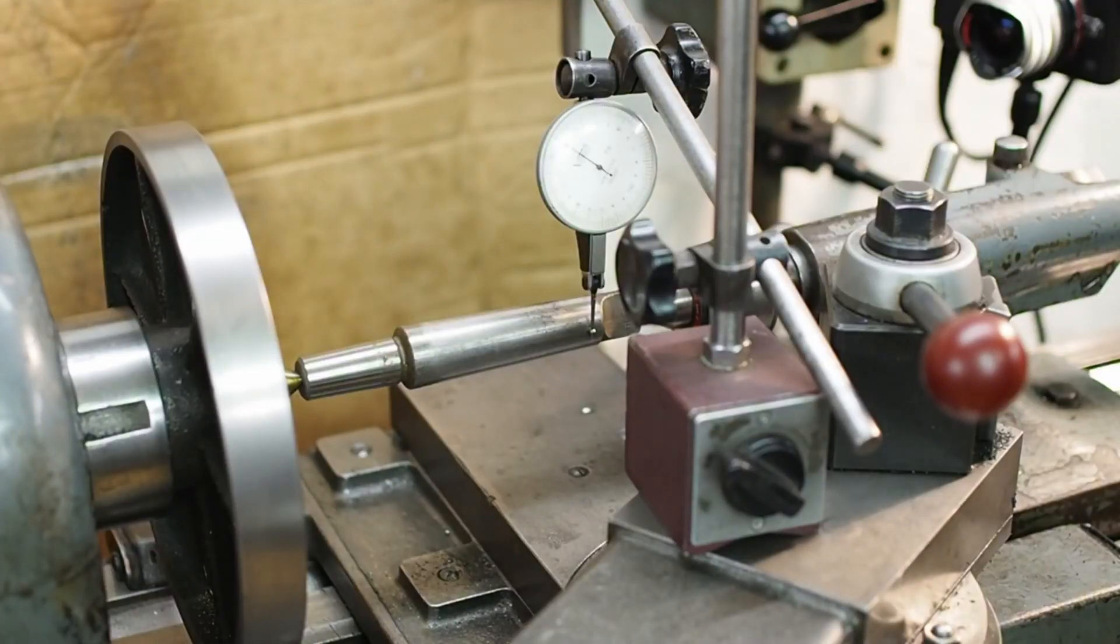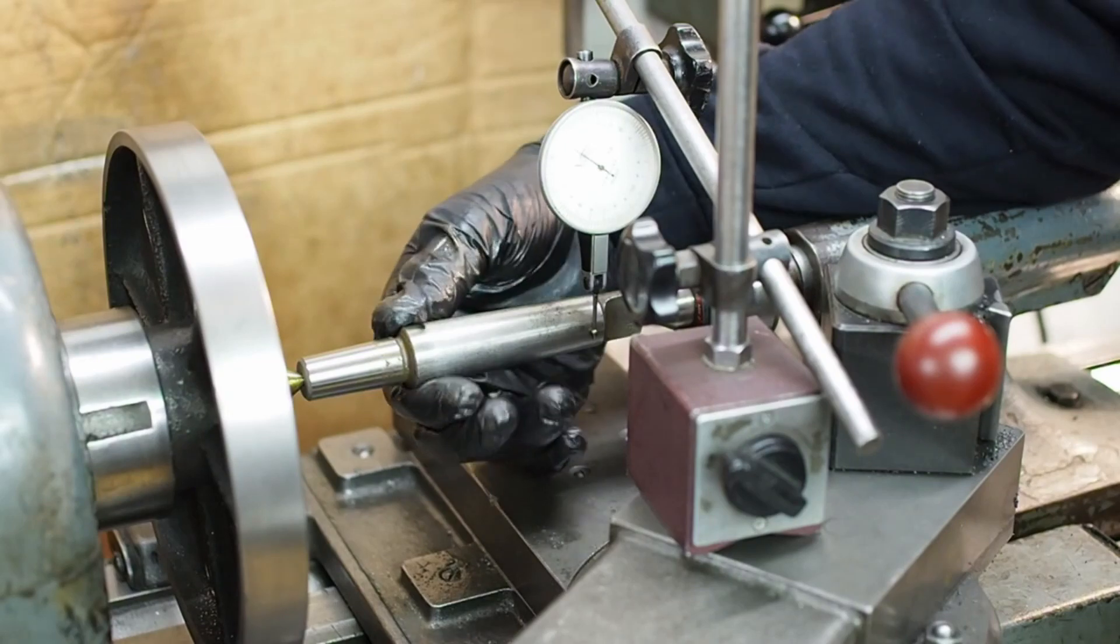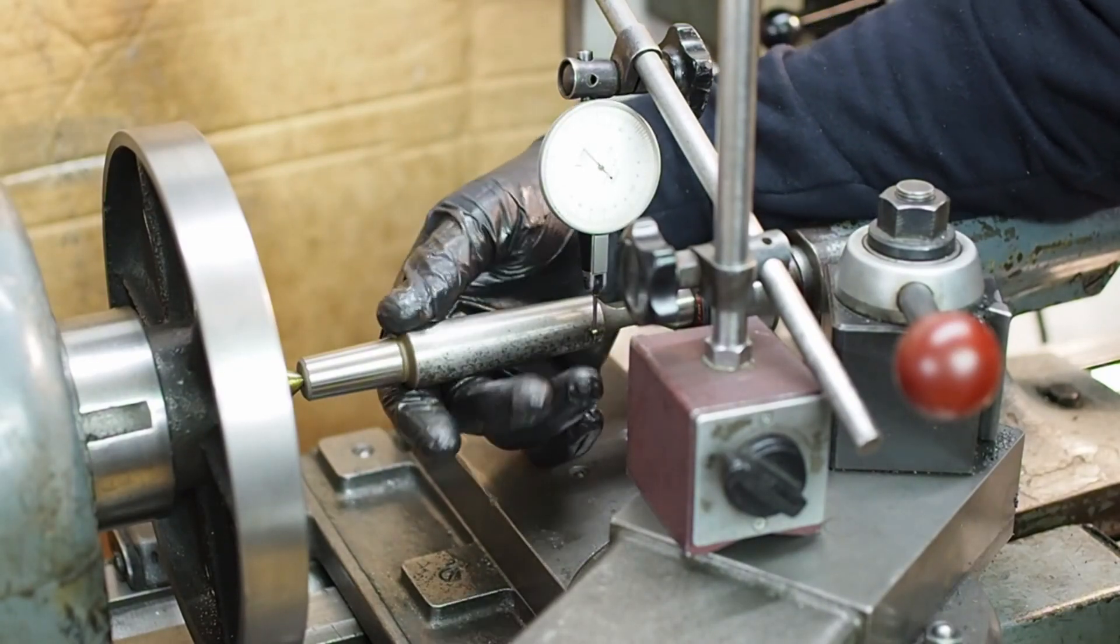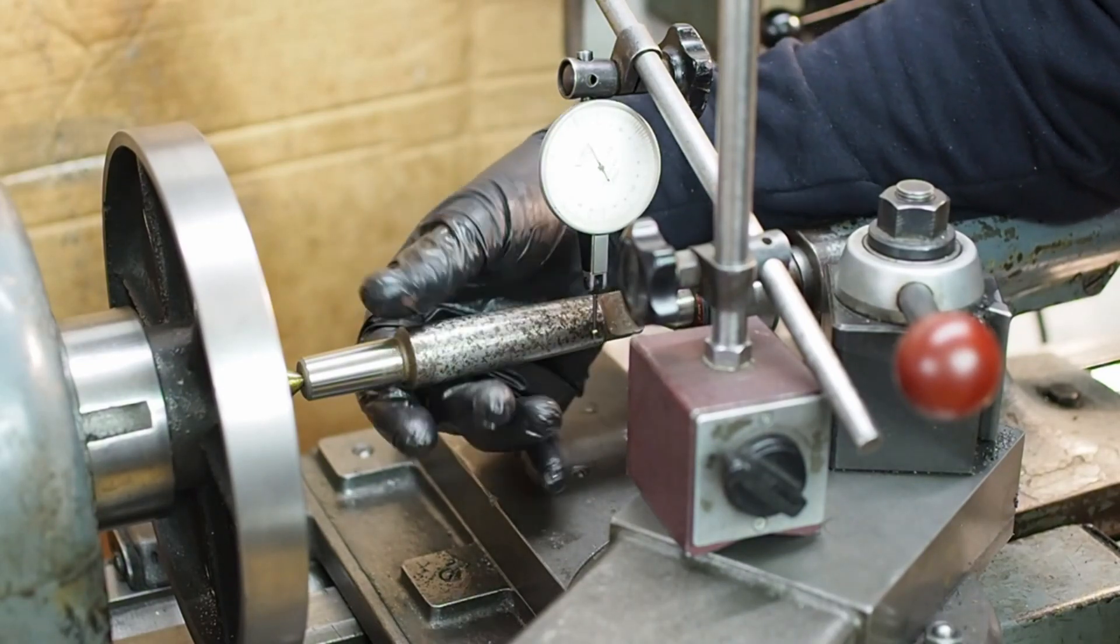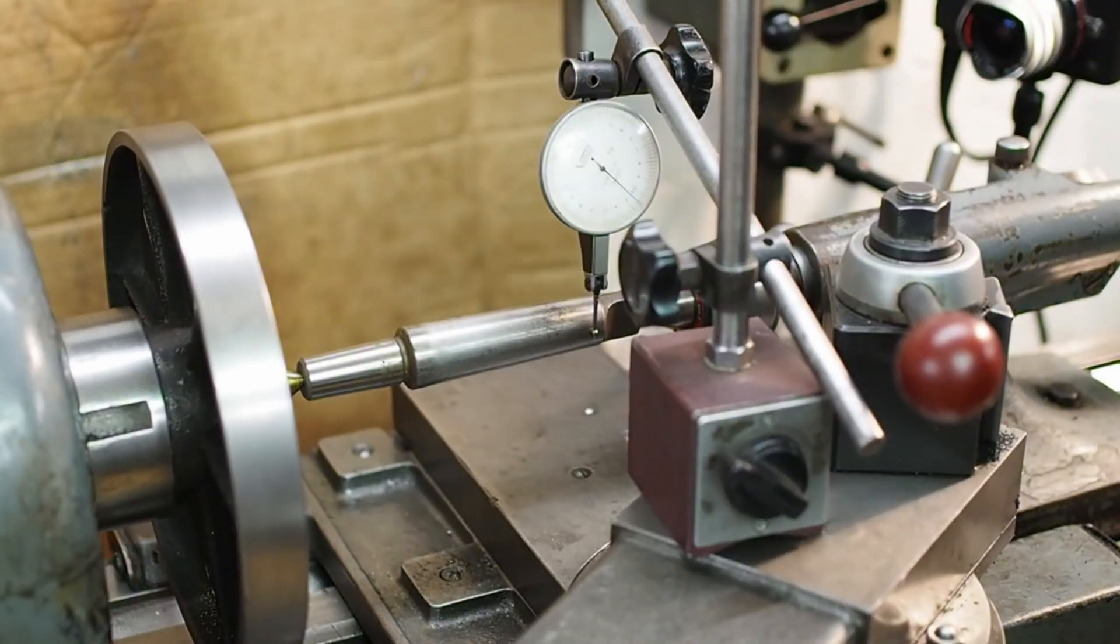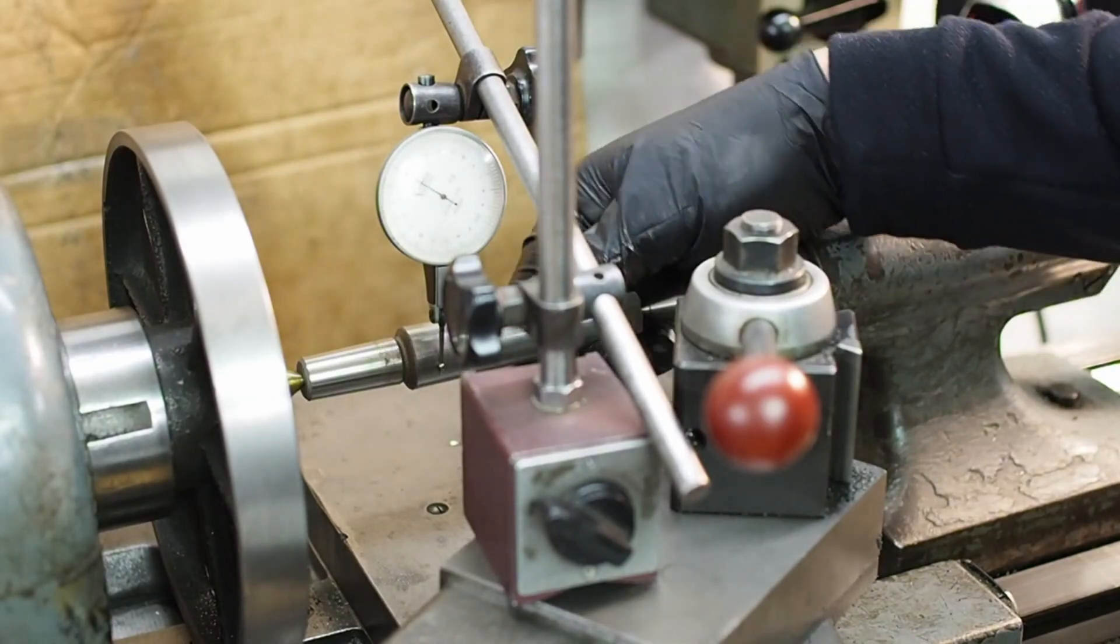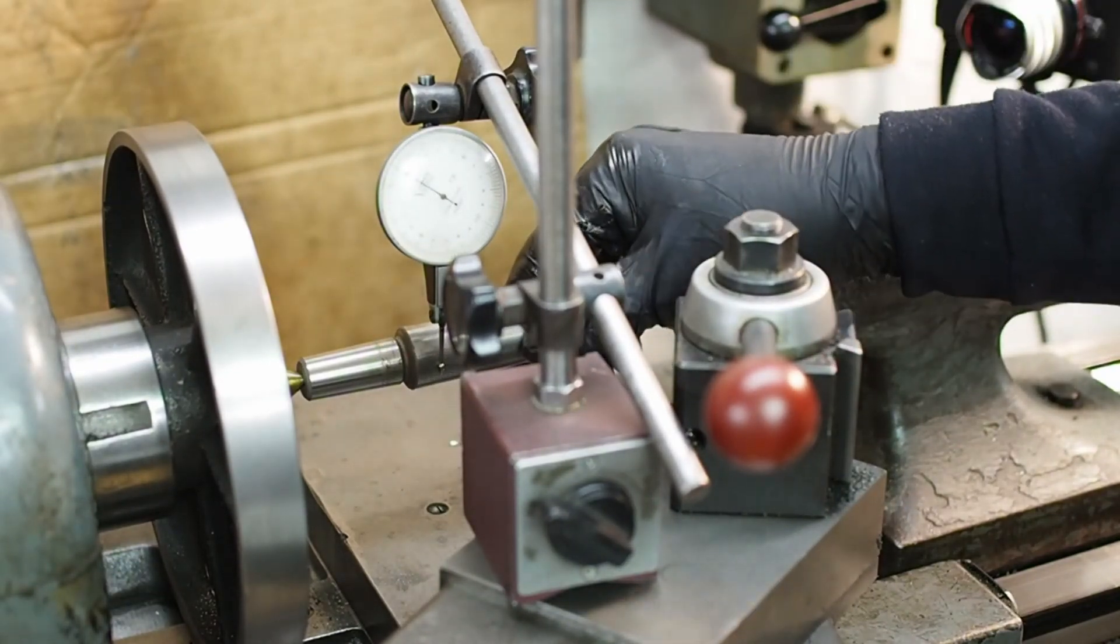So next up I'm just going to check to see whether the centers drilled in the ends of that shank run true to the taper and they don't. There's about one and a half thousandths of total indicated runout. Let's try the other end. Okay that end's better. It only has about six ten thousandths of total indicated runout.